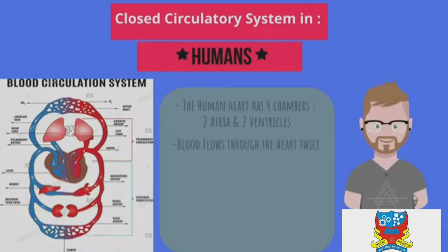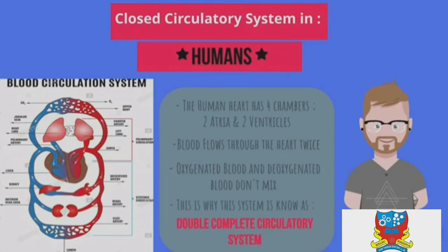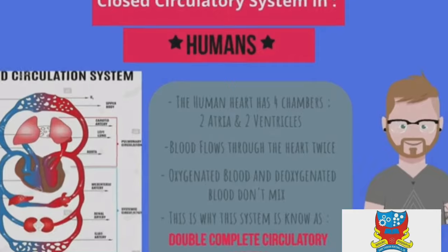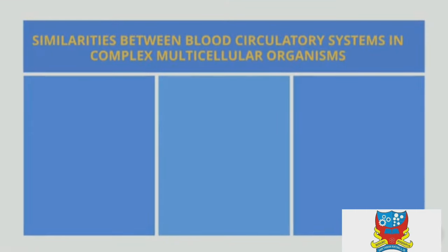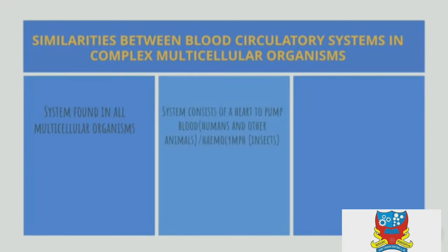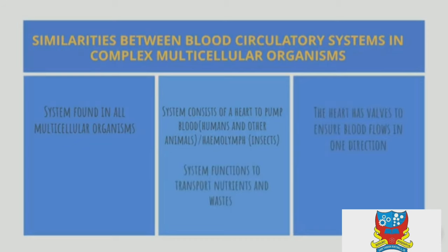In humans, the heart has four chambers: two atria and two ventricles. Blood flows through the heart twice, and oxygenated blood and deoxygenated blood do not mix. This is why the human system is known as the double complete circulatory system. Similarities across systems include: all have a heart to pump blood or haemolymph, all transport nutrients and waste, and all hearts have valves to ensure blood flows in one direction.